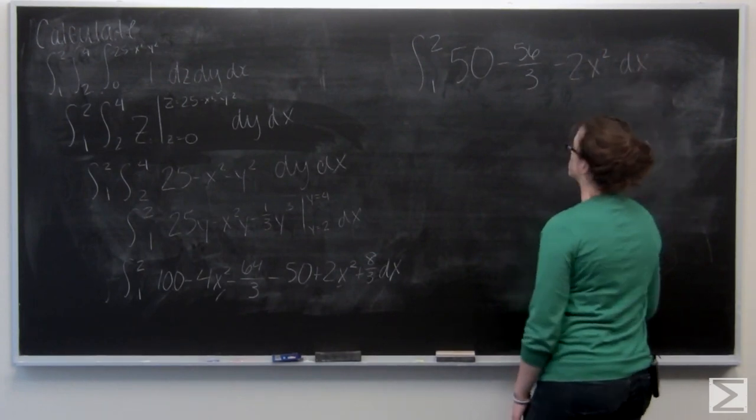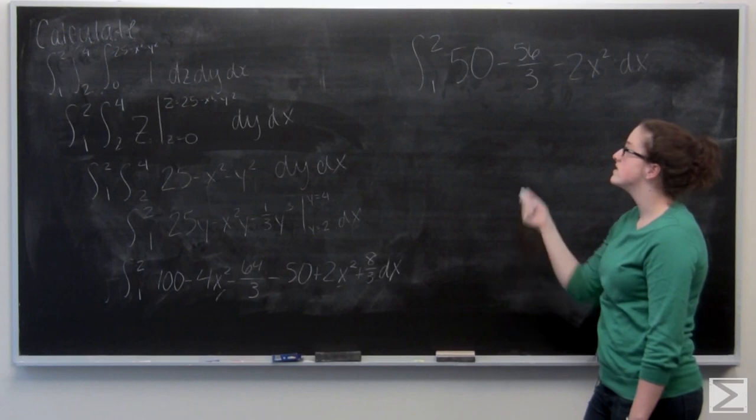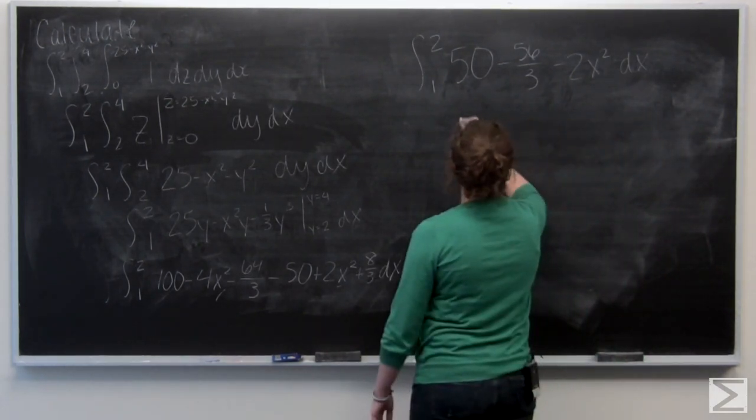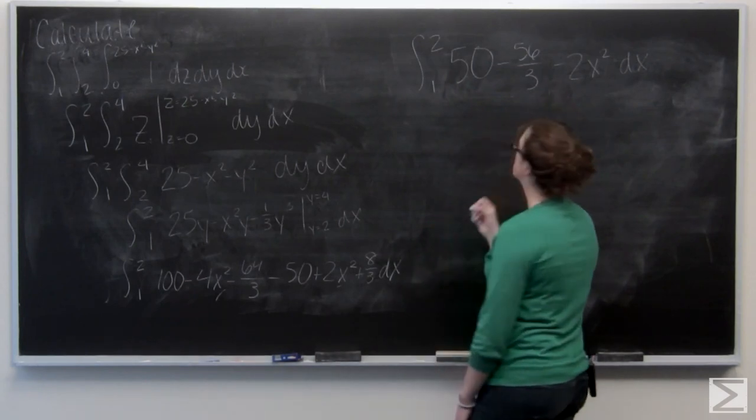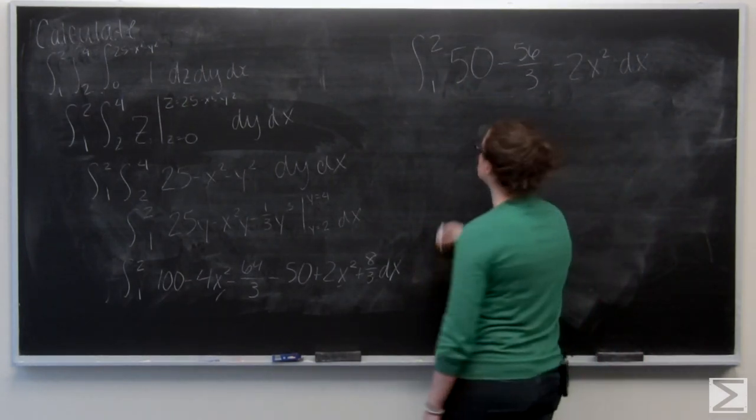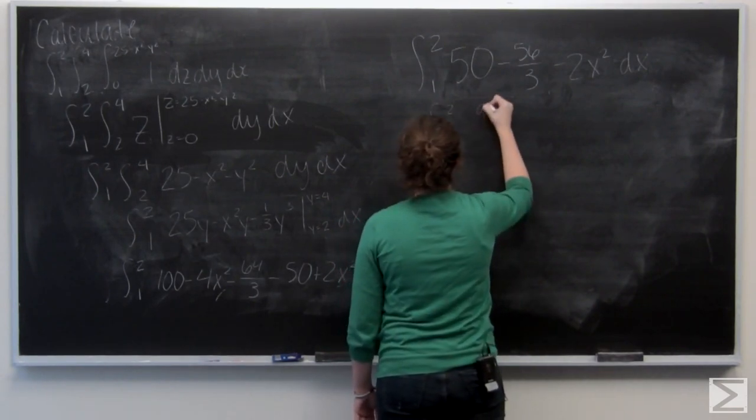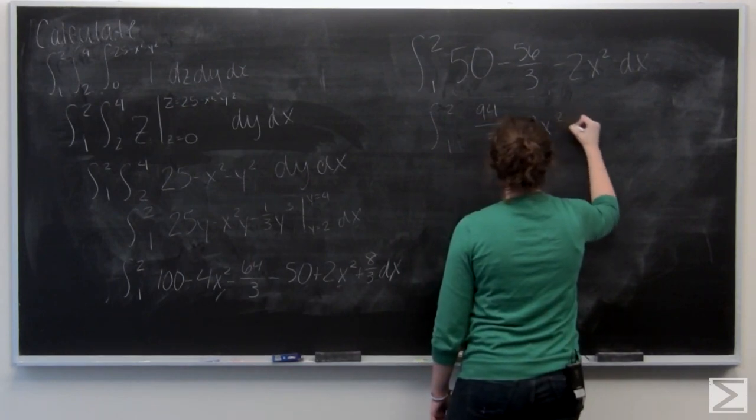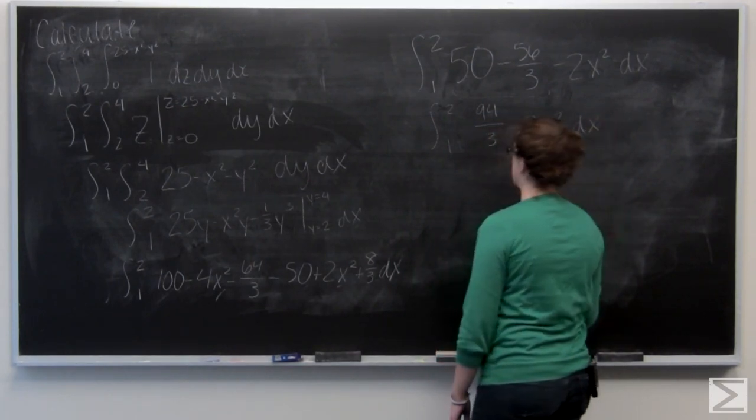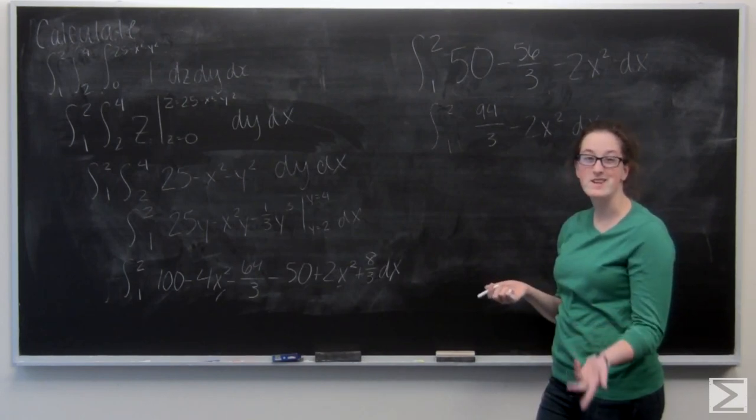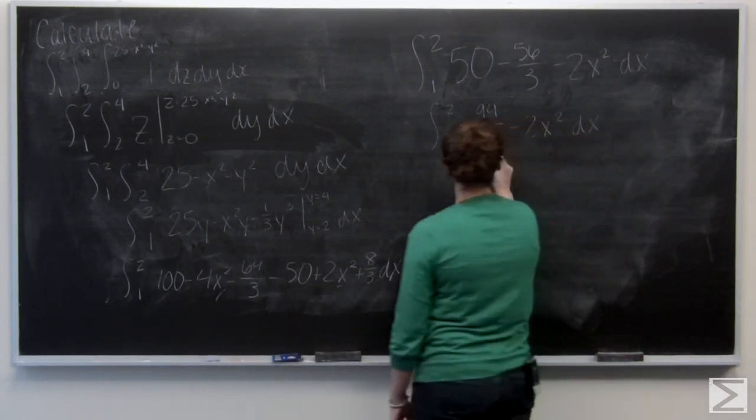We still have to integrate with respect to x. 50 becomes 50x. Oh, let's combine these first. 50 minus 56 thirds is 94 thirds. 94 thirds is a constant, so when I integrate it, it's just 94x over 3.